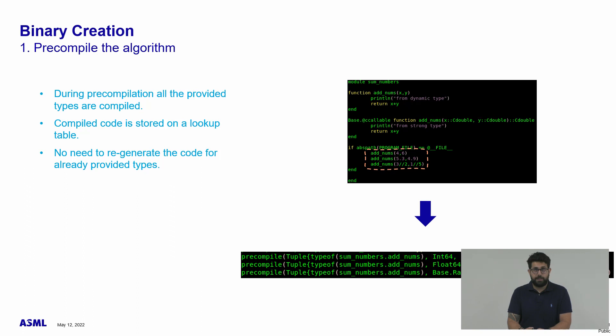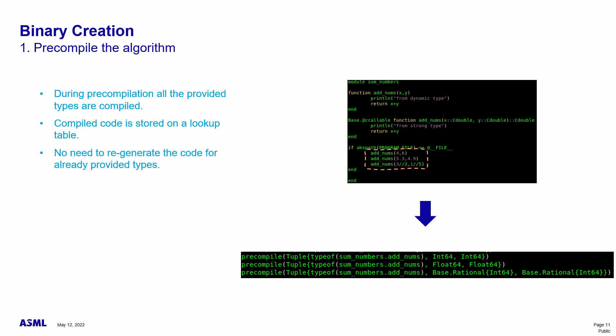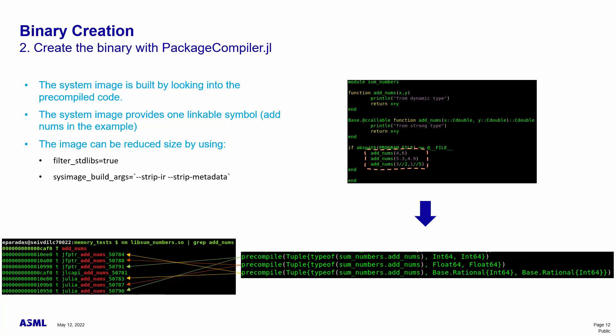First step: precompile the algorithm. To develop a real-time application, we start by creating a module that contains the implementation of the model in Julia. The module exports a ccallable interface — in this specific case, the ccallable interface called with the strong type C double — that performs this highly complicated sum operation. We can call the precompile function with different input types to have different flavors of the same function call. The Julia compiler knows how to properly optimize instructions for strong types like C double, and will try to give the best possible assembly code. After precompilation, we build a system image, which produces a shared object file built by looking into the precompiled code containing all the dependencies needed for correct execution at runtime.